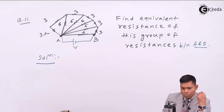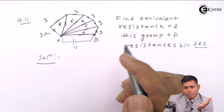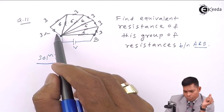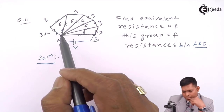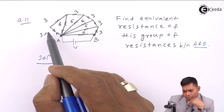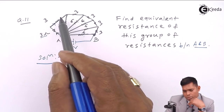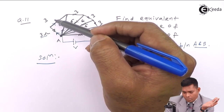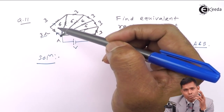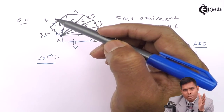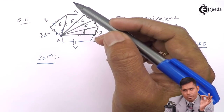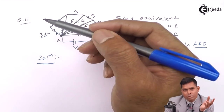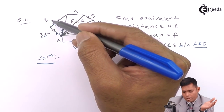We start simplifying from one end of the combination. The current reaching a node moves through both branches. The same current passes through one 3 ohm and also through another 3 ohm on that side — when the same current flows through resistors, those resistors are in series. So these 3 and 3 are in series, giving equivalent resistance of 6 ohm.